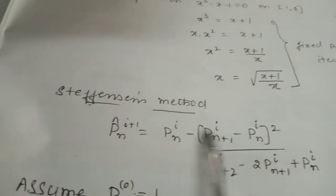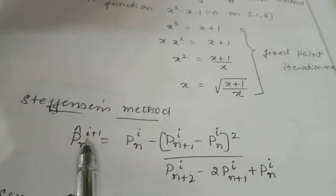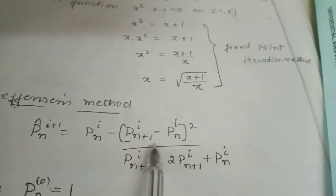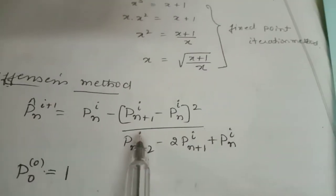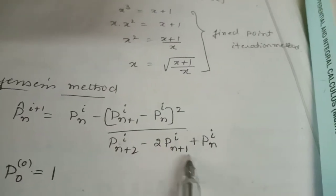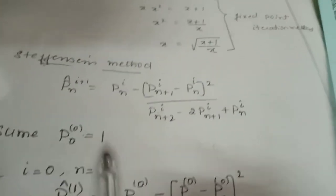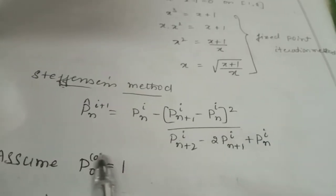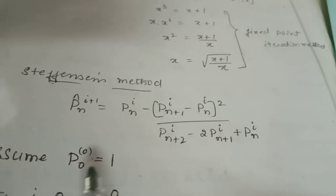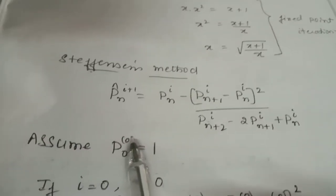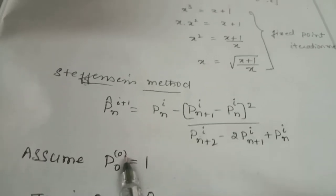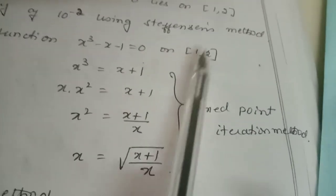Writing the Steffensen method formula again: P̂n(i+1) = Pn(i) − (Pn+1(i) − Pn(i))² / (Pn+2(i) − 2·Pn+1(i) + Pn(i)). We assume that at the 0th iteration we are finding P₀, P₁, P₂ values. Here the superscript represents the iteration number.